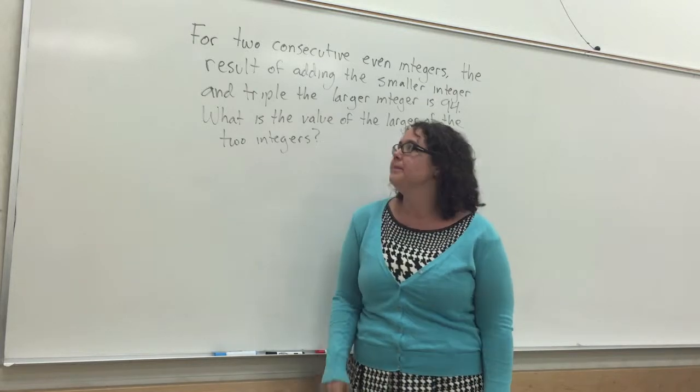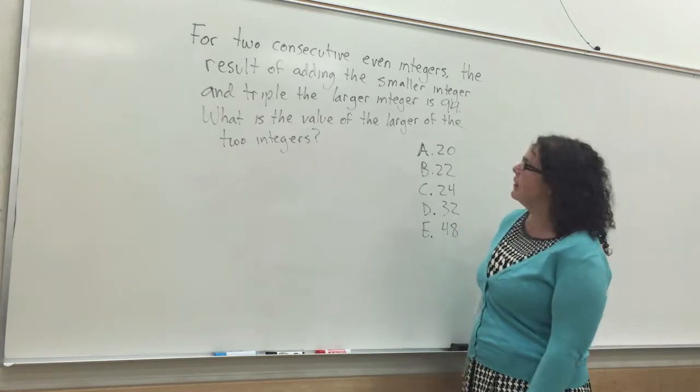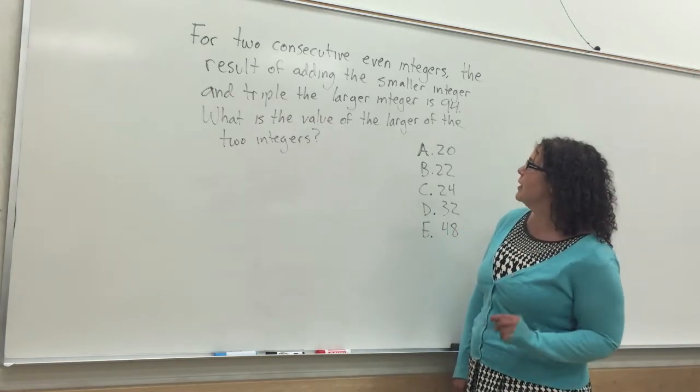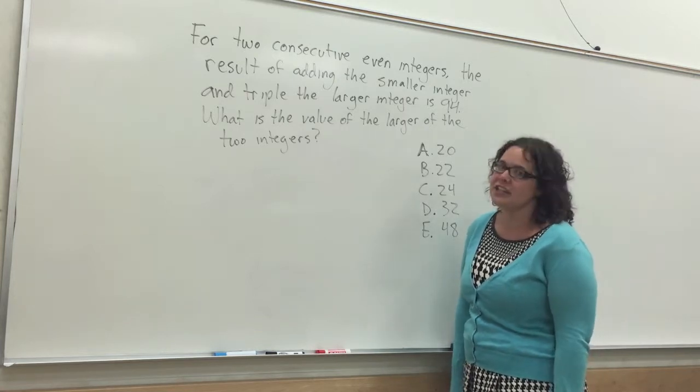Here's my sample problem. For two consecutive even integers, the result of adding the smaller integer and triple the larger integer is 94. What is the value of the larger of the two integers?